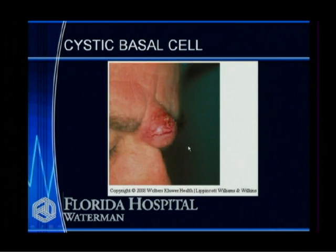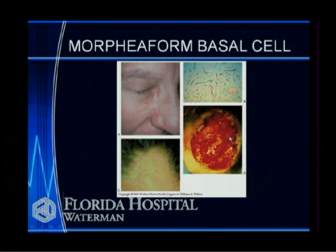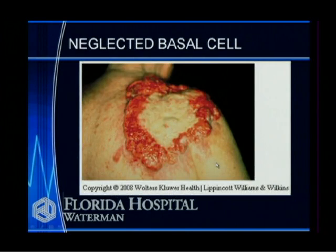Here's a cystic basal cell carcinoma on the bridge of the nose between the eyebrows. There's also a form called morphea, which occupies a larger area — very subtle, but when you start removing it, you find you have to extensively resect a large portion of the scalp or wherever it's arising from to get clean margins. This is a very bad, neglected basal cell carcinoma — it's probably been there for at least a decade or more.